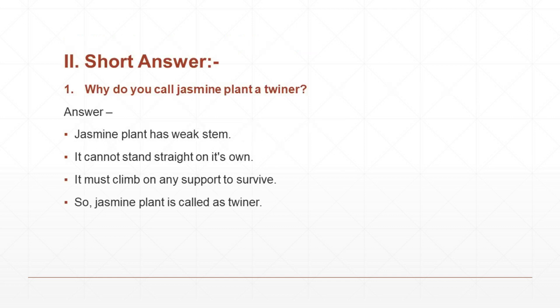Now we pass on to row number two — short answers. First question: Why do you call jasmine plant a twiner? Answer: Jasmine plant has a weak stem. It cannot stand straight on its own. It must climb on any support to survive. So jasmine plant is called a twiner. 'Survive' means live.